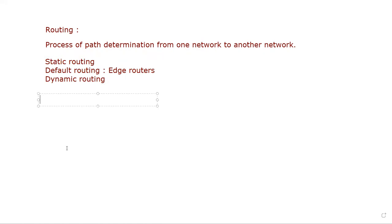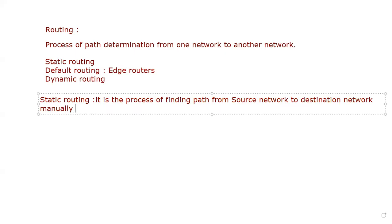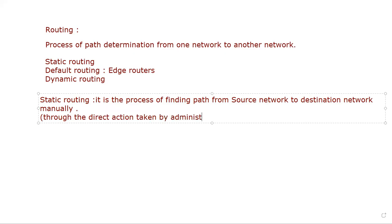What is static routing? Static routing is the process to find the path from source to destination. In static routing you have to find the path from source to destination manually.